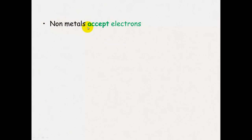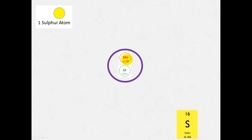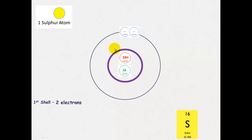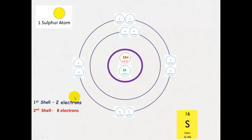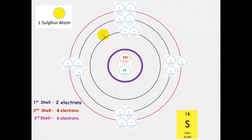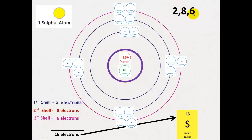Non-metals, on the other hand, will accept electrons to form anions which have a negative charge. If we look at the sulfide ion, it has a two-negative charge. This is how it's formed from the sulfur atom. Sulfur has an atomic number of 16, which means it has 16 protons and 16 electrons in a neutral atom — two in the first shell, eight in the next shell, and six in the outer shell, giving it a 2, 8, 6 electron configuration.